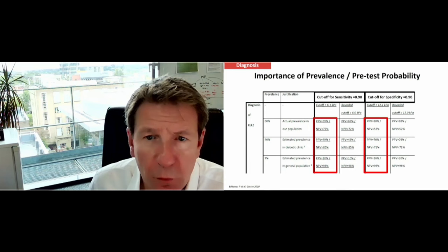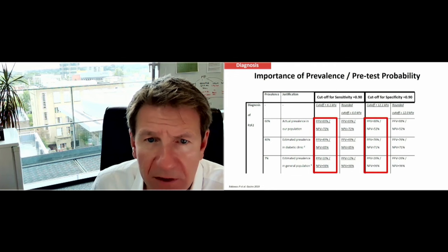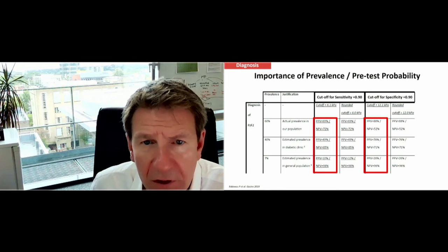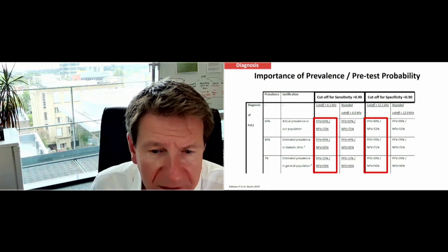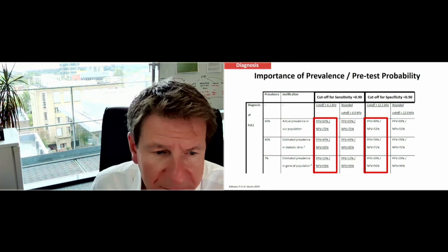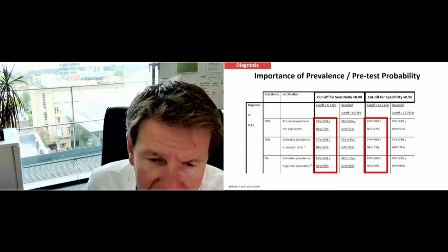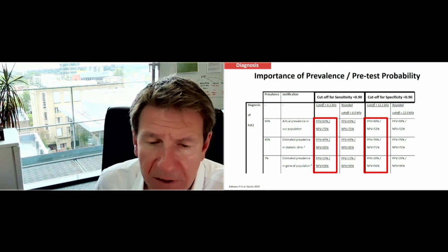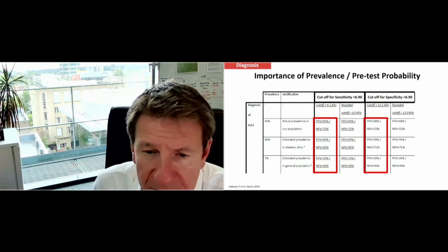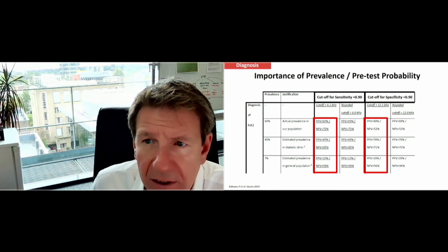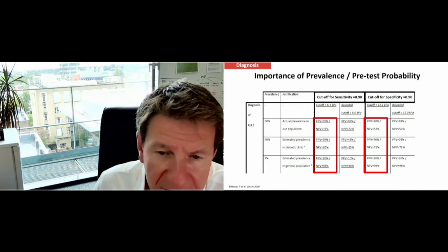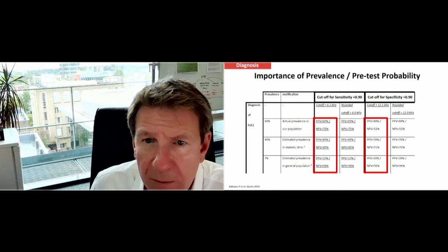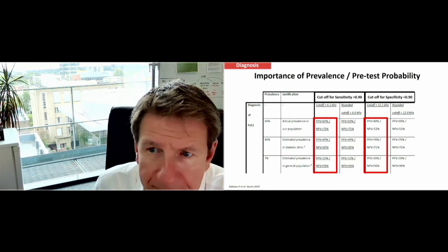One of the key points is understanding the setting within which a biomarker like VCTE is evaluated, specifically the importance of prevalence and pretest probability. For the rule-out cutoff, the negative predictive value is 72%, and as prevalence drops and the condition becomes less common, the negative predictive value markedly increases — so as a test to rule out, it becomes ever more useful. However, the corollary applies for specificity: as prevalence drops from the study population down to the general population, the positive predictive value starts to drop quite remarkably, and one needs to be cognizant of that when making decisions.